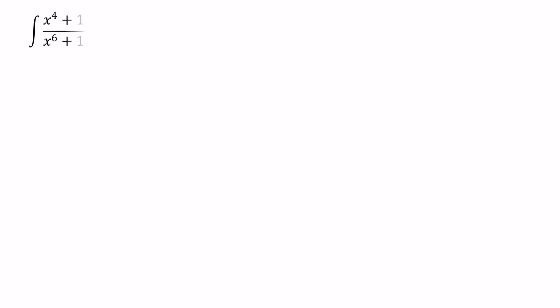Before we begin, let's consider how we can solve this question. Here we have the function x to the power of 4 plus 1 over x to the power of 6 plus 1. We can factorize the denominator value x to the power of 6 plus 1 using the equation a cubed plus b cubed equals a plus b times a squared minus ab plus b squared.